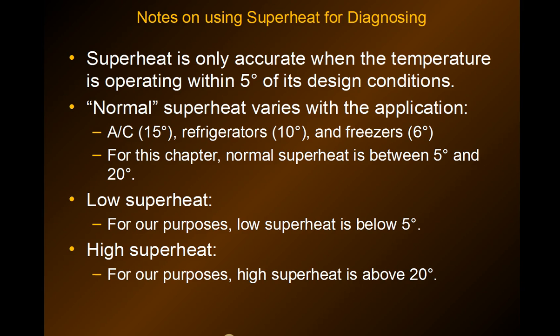Normal superheat for this chapter varies depending on whether it's an air conditioner, refrigerator, or freezer — that's on the cheat sheet you can download. But for this chapter, normal superheat is between 5 and 20 degrees Fahrenheit. Low superheat is below 5 degrees Fahrenheit, and high superheat is above 20 degrees.